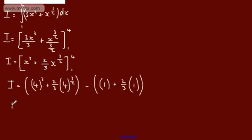So we've got i will be equal to, this is going to be 64. 4 cubed is 64. The square root of 4 is 2, 2 cubed is 8, so that's going to give me plus 16 over 3, and then I'm going to subtract away 1 plus 2 over 3.